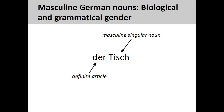The German noun 'Tisch,' meaning 'table,' has a masculine grammatical gender, so its definite article is 'der.' Here, the grammatical gender does not indicate any biological gender of the noun — there is nothing particularly male about a table. Although the grammatical gender of German nouns is sometimes difficult to determine, there are some rules that can help you. Let's take a look at them now.